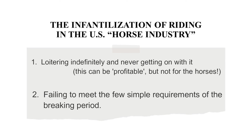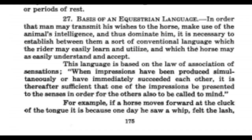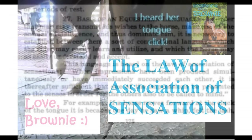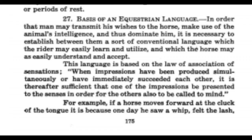This is lecture one and we're almost done. I'm going to give you the reading assignment for lecture number two, and it is to look ahead to section 27. Some of you will recognize it — it is the basis of an equestrian language, and many of you have had this lesson from Brownie. You'll find it on page 175 in the manual. It's section two, chapter three, education of the horse, section 27: 'Basis of an Equestrian Language,' on pages 175 through 177. That will be the topic of our next lecture.